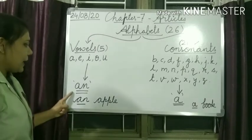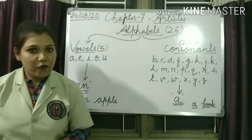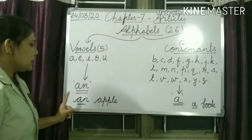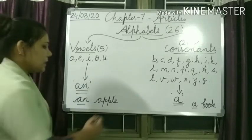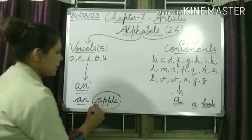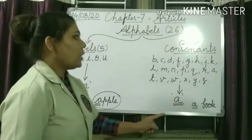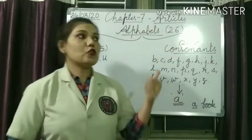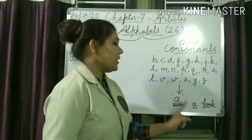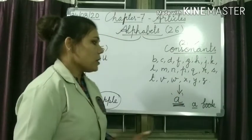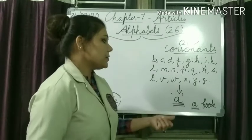We use the article An before nouns which are in singular form and begin with a vowel sound. For example, the noun 'apple' is singular and begins with the vowel letter A, so we say 'an apple.' On the other hand, when nouns are in singular form and begin with consonant sounds, we use article A — for example, 'a book.'